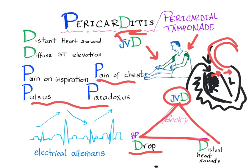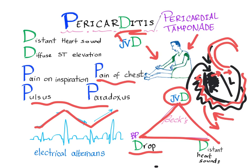Also on EKG, there is a phenomenon called electrical alternans, which is a weak beat followed by a strong beat, then weak, then strong. Why? Because the heart and the surrounding fluid cause the heart to swing and swim — it goes to the front and to the back, closer to the electrodes then away from the electrodes, producing this up-and-down electrical alternans pattern.